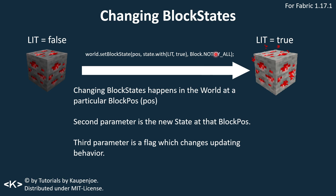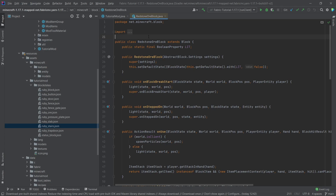If you call this at the correct position, then lit-equals-false — because we are putting in true here — would turn into lit-equals-true. And now we're back in the RedstoneOreBlock class.